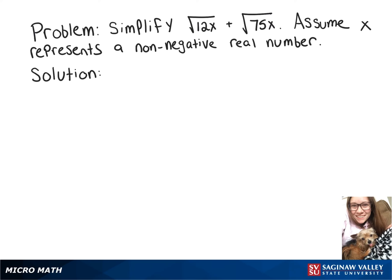We're going to simplify the square root of 12x plus the square root of 75x. And to make this easier to work with, we're going to see what perfect squares we can pull out of the square root.